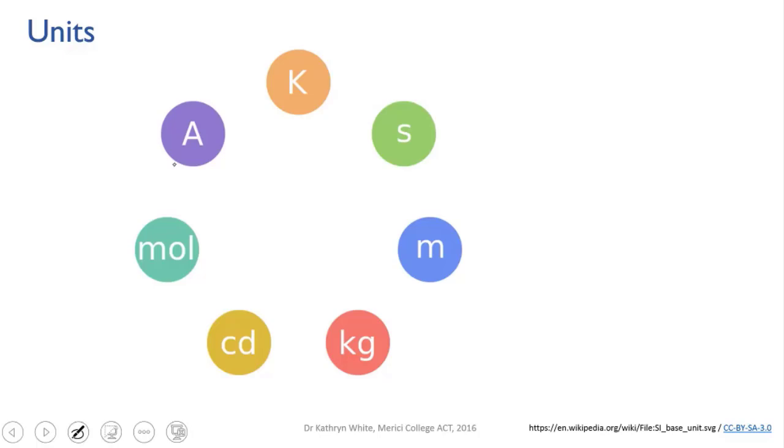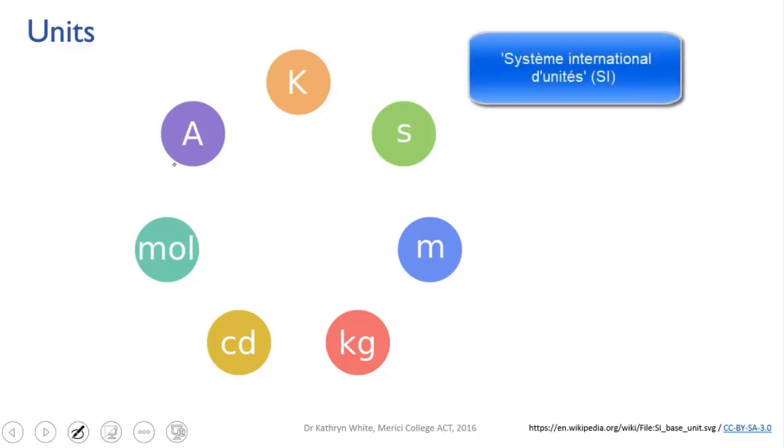In chemistry we use metric units. The modern form of the metric system is known as the International System of Units, which has seven base units, and from these the units of all other quantities can be derived.